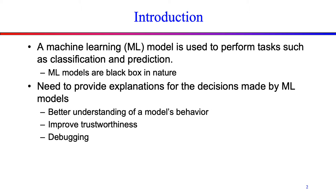Artificial intelligence based software systems are widely used across business domains. At the core of AI based software systems is a machine learning model that is used to perform tasks such as classification and prediction. In general, machine learning models used in such tasks are black box in nature — the reasoning behind their decision is generally not known to the end user. This leads to lack of trustworthiness and adaptability of AI based software systems.